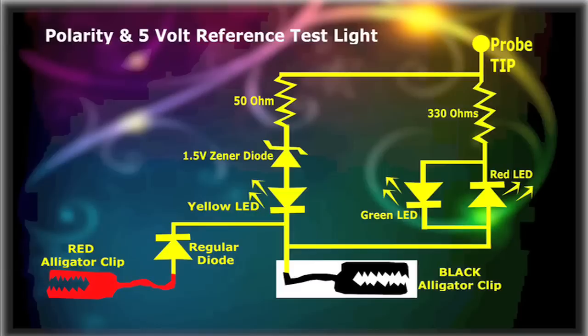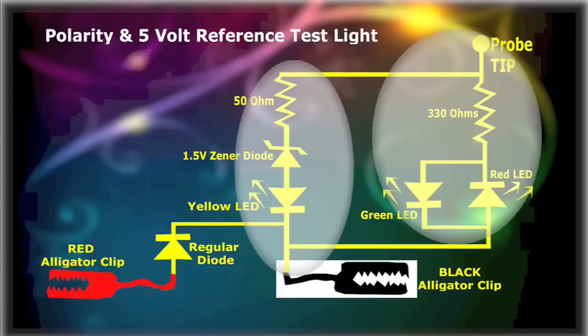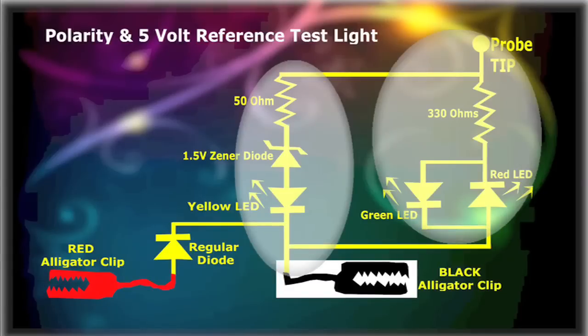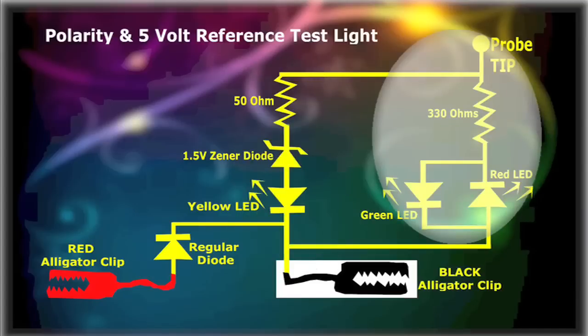Here's how the Dual Polarity and 5V Reference test light works. The circuit is composed of two independently operating circuits. One tests the 5V Reference, and the other tests the polarity of the circuit.